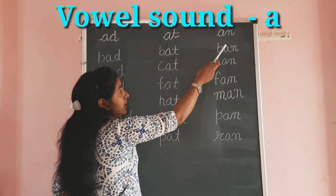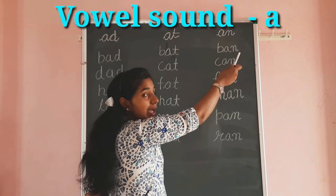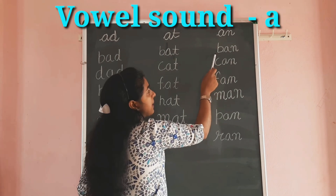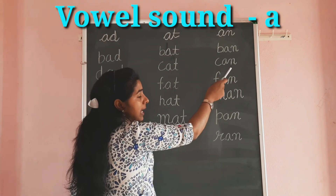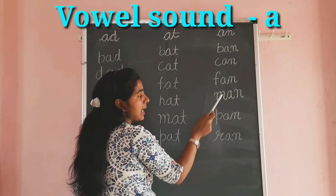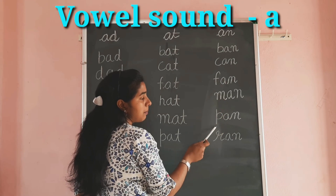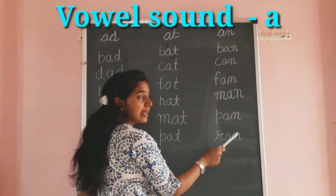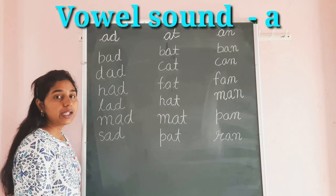Next slide. All these words are made with the help of A-N. So we will start to read them: B-A-N, Ban. C-A-N, Can. F-A-N, Fan. M-A-N, Man. P-A-N, Pan. R-A-N, Ran. After this we will read the sound of E.